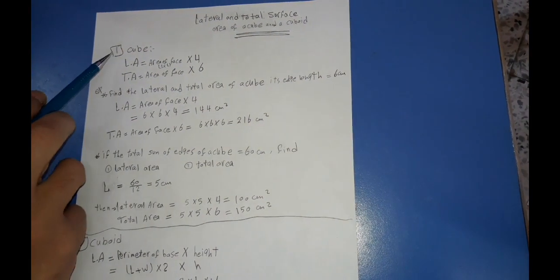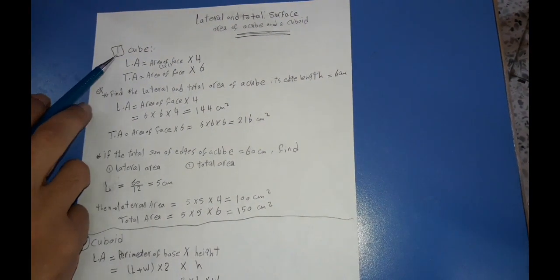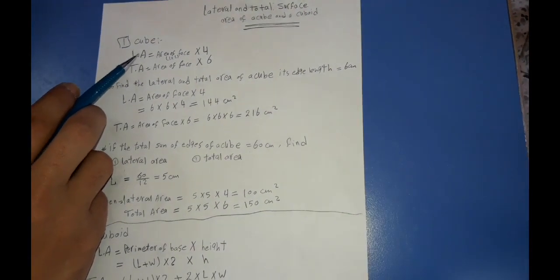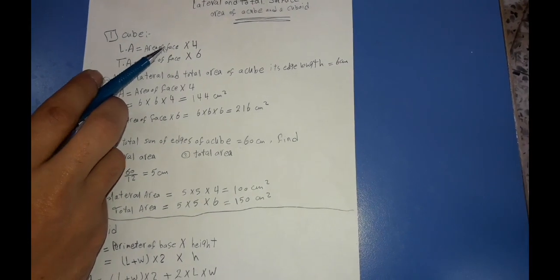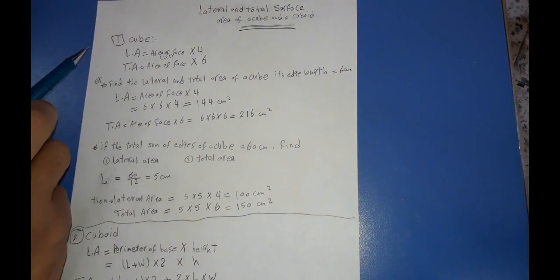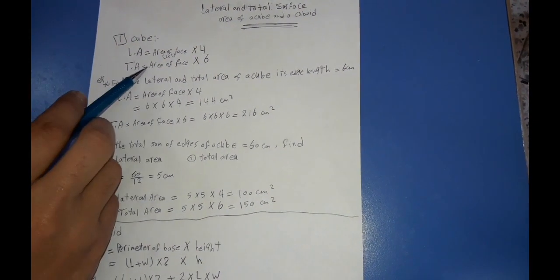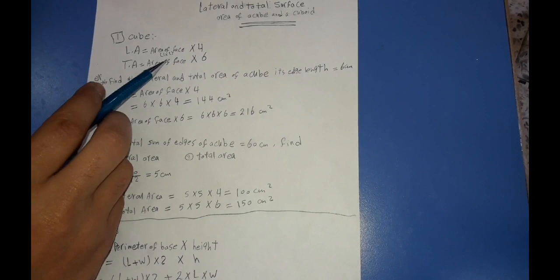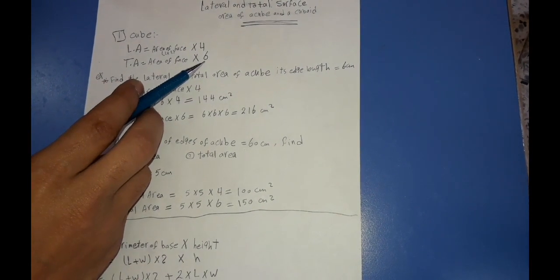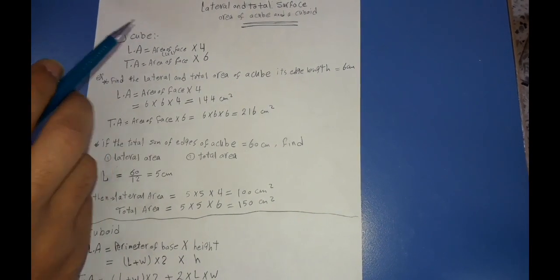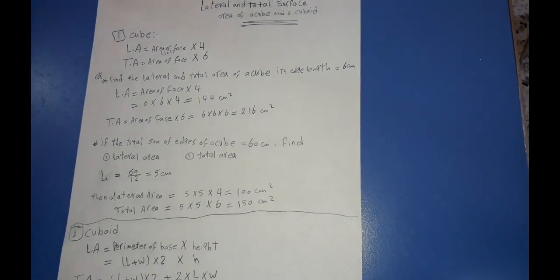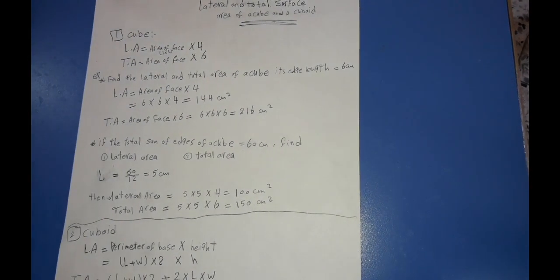First, we will take the cube. Lateral area of the cube equals area of one face multiplied by 4, and total area equals area of one face multiplied by 6. The lateral area meaning the area of the lateral faces.